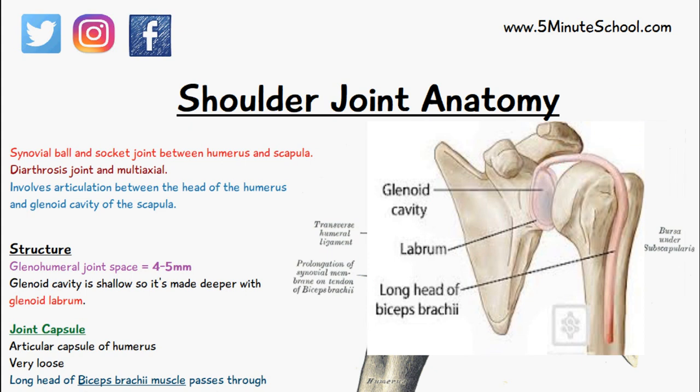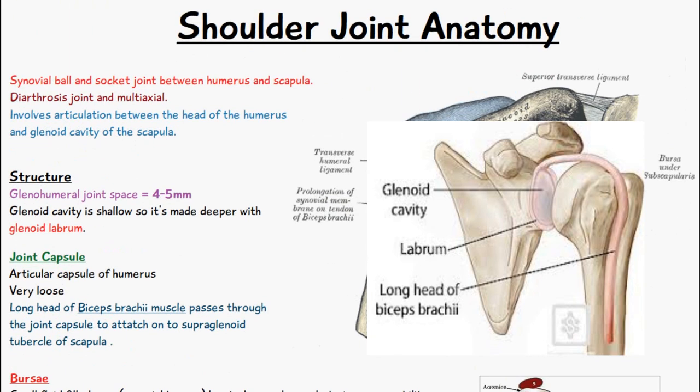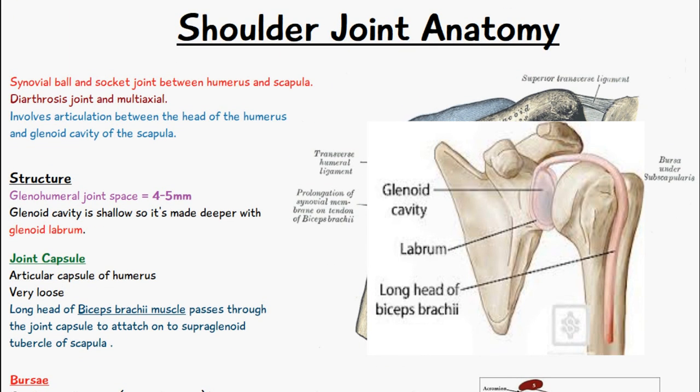The glenoid cavity of the scapula is quite shallow, so it's made deeper with something known as a glenoid labrum, which is basically like a ring of fibrous tissue that surrounds the glenoid cavity. When the head of the humerus attaches, it gives about 45 millimeters of space.